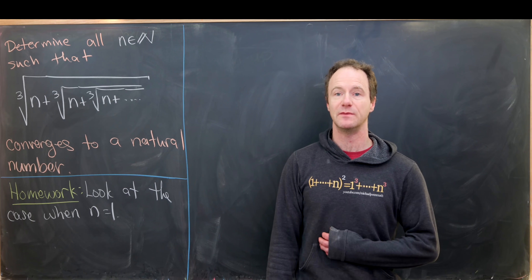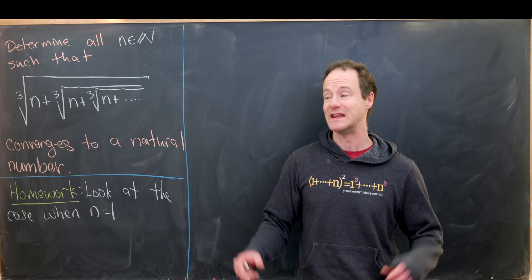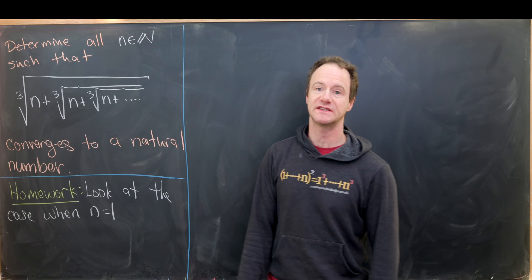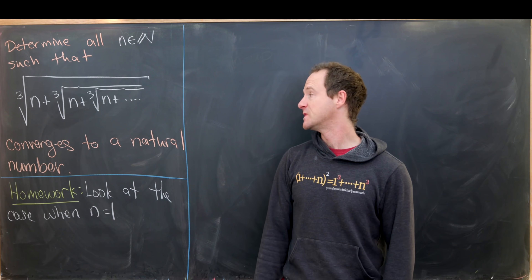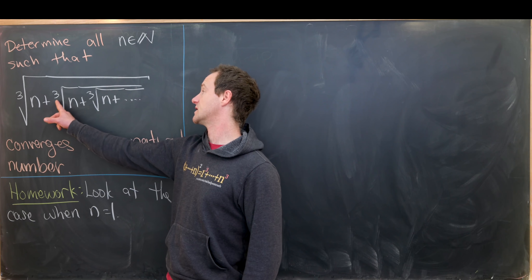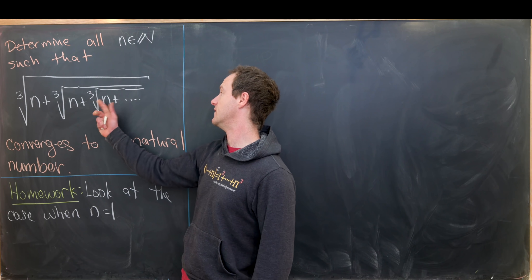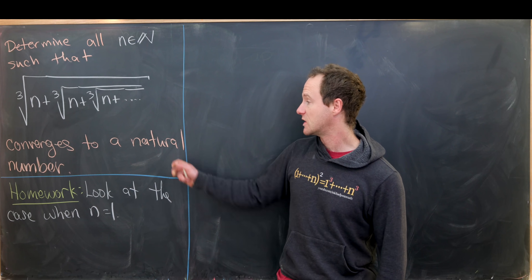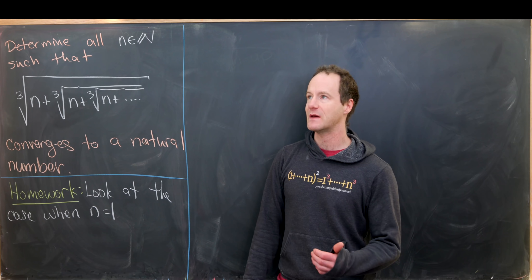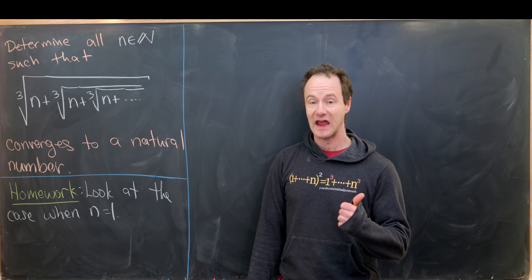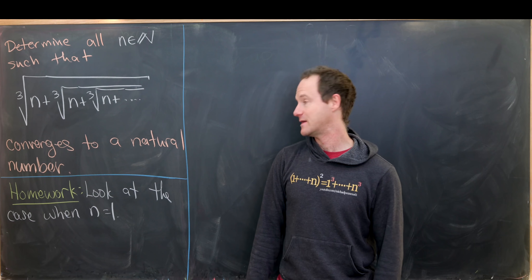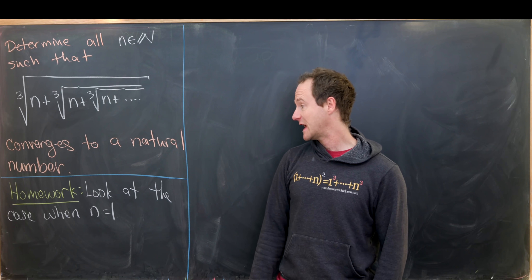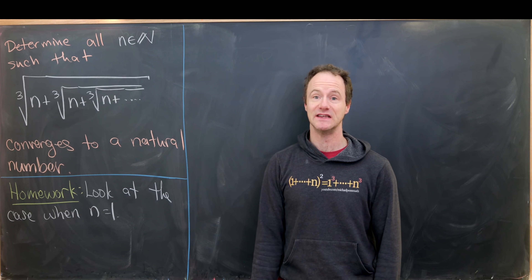Today we're going to explore a family of sequences that can be represented as an infinite nesting of cube roots. Our goal is to determine all natural numbers n such that the cube root of n plus the cube root of n plus the cube root of n, all nested into each other infinitely, converges to a natural number. We need to show that it converges and then determine when that limit is in fact a natural number. We'll work through all details except when n equals 1.